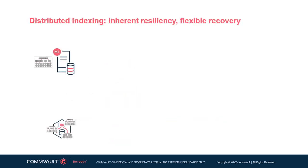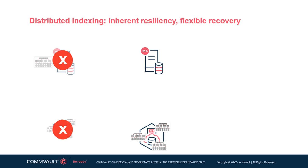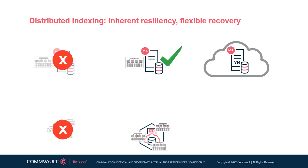The fact that index information is also written to each storage target contributes to the resiliency and flexibility of a Commvault software environment. In the case of a failure, a different media agent responsible for a secondary copy of the data will also contain all the indexing information required to perform recovery. A different media agent than the one used to perform the backup can be used to recover the data. In fact, a media agent does not necessarily have to exist prior to data being written to a storage target — a cloud media agent can be created or powered on only when a restore operation is desired.